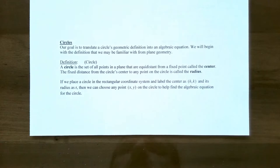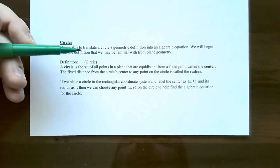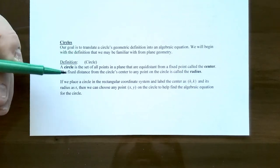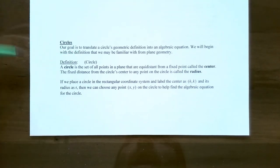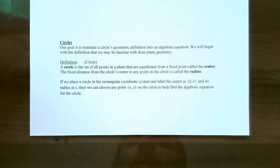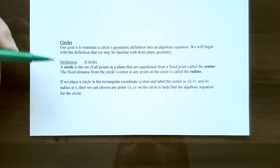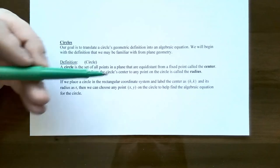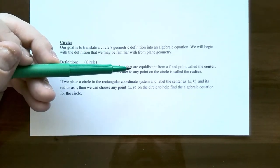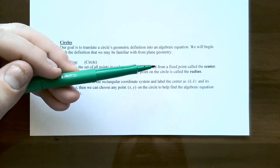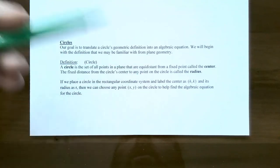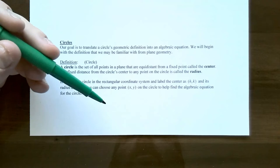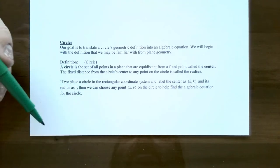Circles. The goal for this video is to be able to translate a circle's geometric definition into an algebraic equation. How do you know whether you have an equation that represents the graph of a circle? We start with the definition: a circle is a set of points in the rectangular coordinate system that are all equal distance from a fixed point called the center. The center is not actually part of the circle.